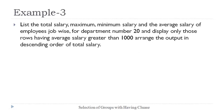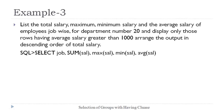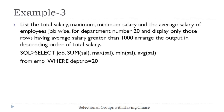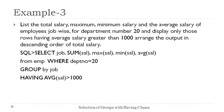In example 3, this query is further extended to display the output in descending order of total salary. The query selects job, SUM, MAX, MIN, and AVG salary from the employee table where department number is 20, GROUP BY job, HAVING AVG(salary) > 1000, and then an ORDER BY clause is added to display records in descending order based on their total salary. Let's execute these queries to understand their implementation.